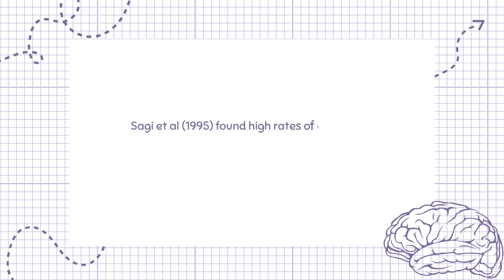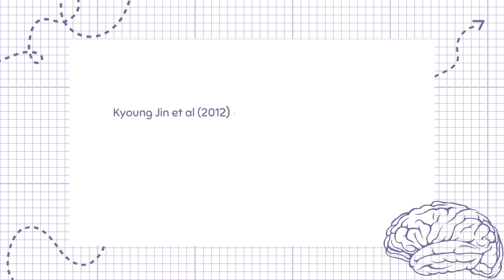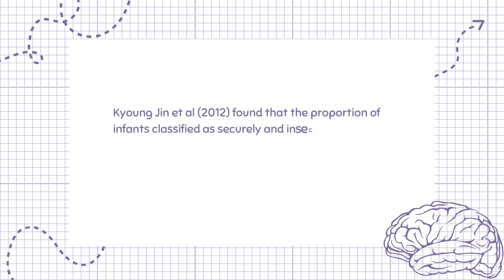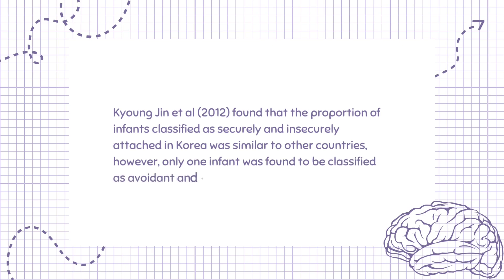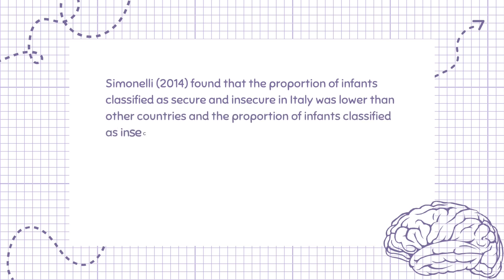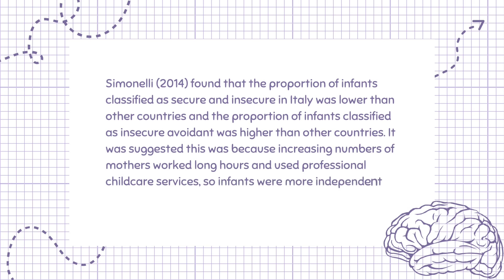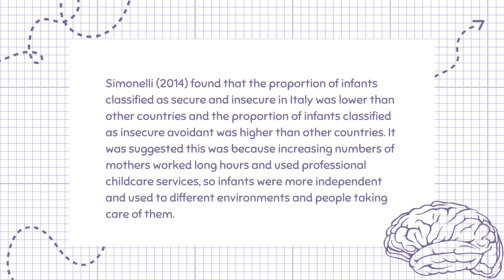Sagi et al. (1995) found high rates of insecure-resistant attachments in Israeli children, reflecting differences in child-rearing practices. Kyung-jin et al. (2012) found that the proportion of infants classified as securely and insecurely attached in Korea was similar to other countries; however, only one infant was classified as avoidant and the rest were classified as resistant. Simonelli (2014) found that the proportion of infants classified as secure in Italy was lower than other countries and the proportion classified as insecure-avoidant was higher. It was suggested this was because increasing numbers of mothers worked long hours and used professional childcare services, so infants were more independent and used to different environments.